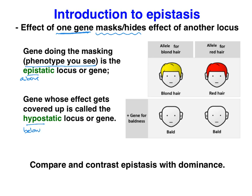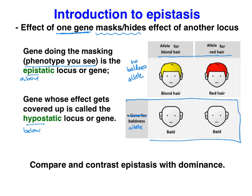So here we have two genes: a gene for hair color, where we can have either a blonde hair allele or a red hair allele. And then we have a gene for baldness, where we can either have the no-baldness allele or the baldness allele. If you have the allele for baldness, it doesn't matter what hair color you have — this individual still has the gene for blonde hair, this individual still has the gene for red hair, but we can't see that trait.